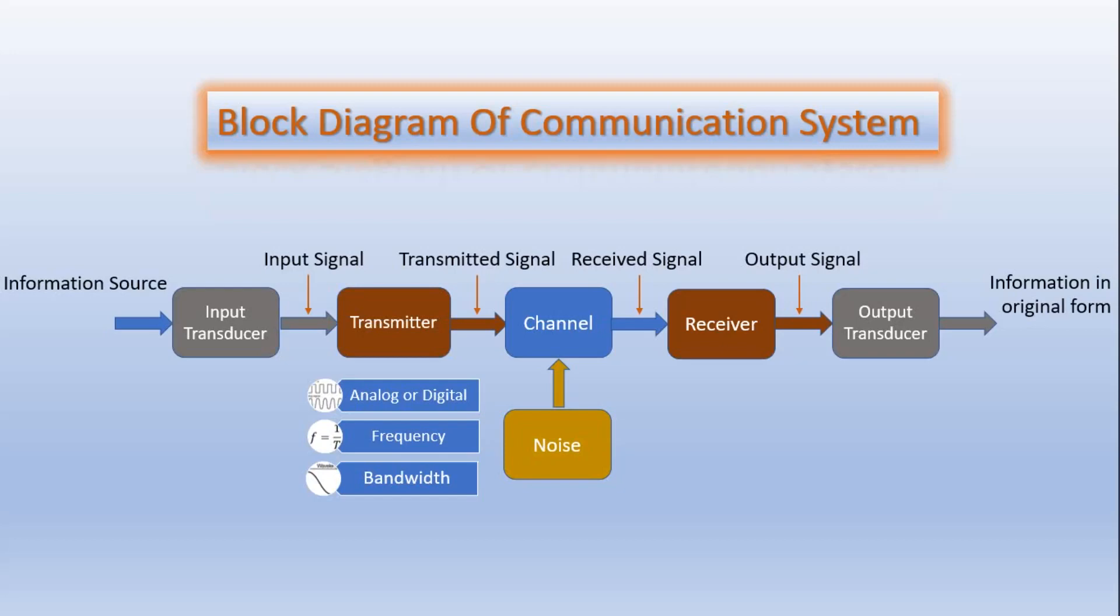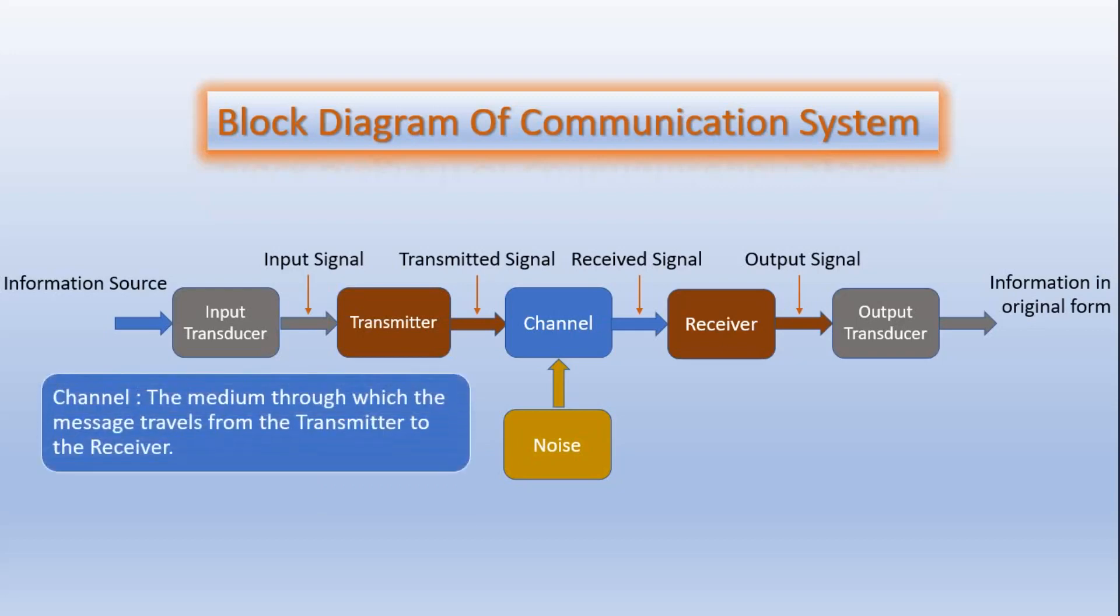With reference to the block diagram of a communication system, the term channel means the medium through which the message travels from transmitter to the receiver. There are two types of channels, namely point-to-point channels and broadcast channels. Point-to-point channels can be named as physical channels, and broadcast channels can be named as wireless channels.